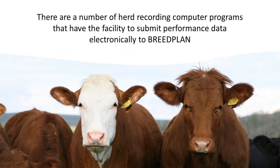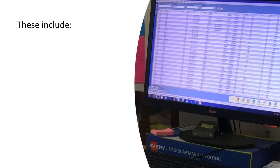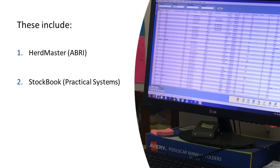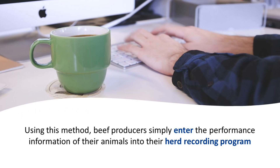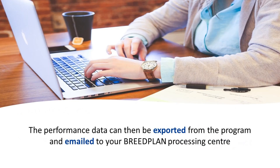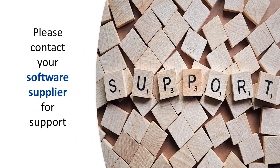There are a number of herd recording computer programs that have the facility to submit performance data electronically to BreedPlan. These include HerdMaster, Stockbook, CoolCollect and CattleLink. Using this method, beef producers simply enter the performance information of their animals into their herd recording program. The performance data can then be exported from the program and emailed to your BreedPlan processing centre. If you are in any doubt about whether your herd recording computer program is BreedPlan compatible, or if you require any assistance submitting your performance data using this method, please contact your software supplier.